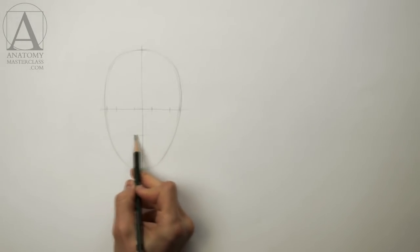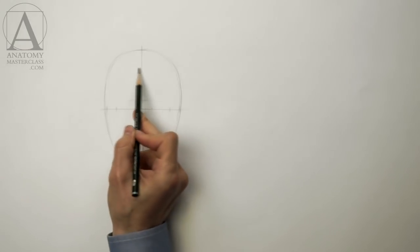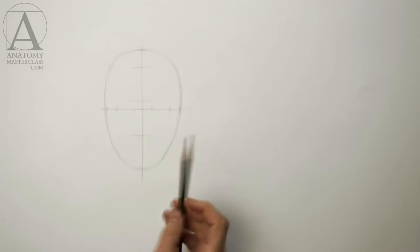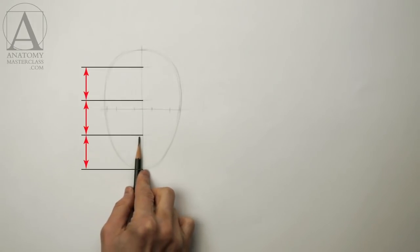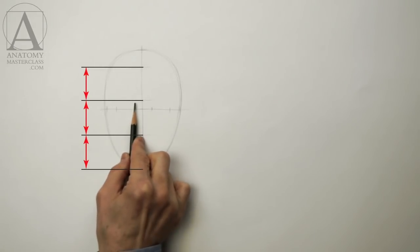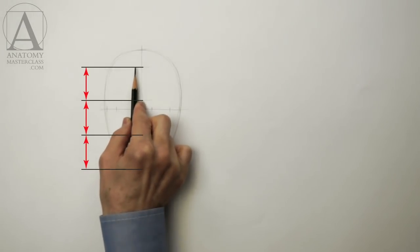Another important proportion of the human face that every fine artist must know is that the distance from the chin to the base of the nose is equal to the distance from the base of the nose to the eyebrow line, which in turn is equal to the distance from the eyebrow line to the line of the hair roots.